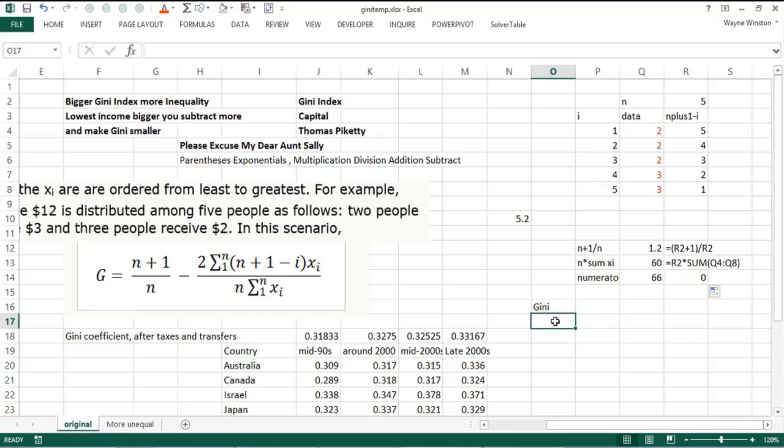Now I'm ready to get the Gini index. The Gini index would be n plus one over n—that's this—minus the numerator divided by the denominator. That's 0.1, which is much lower inequality than what these other countries we've listed had because this is a pretty equal economy. We'll show an example of how if you make the incomes more unequal, the Gini index can go through the roof.